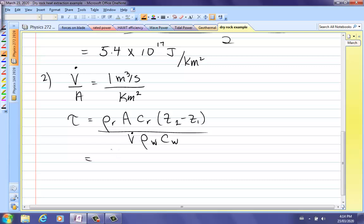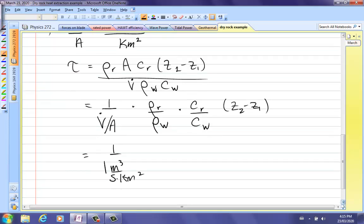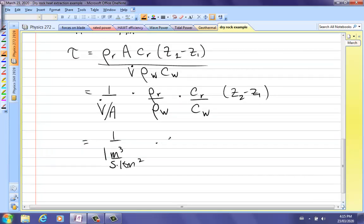Density of that rock. Well, what we can do is write it like this a lot easier. This is 1 over V dot over A. I'm just going to take the A to the bottom of the bottom, which is the same as the top. Ratio of density of rock to density of water. Ratio of specific heat capacity of rock to specific heat capacity of water. Those are now unitless ratios there. Times Z2 minus Z1. It's going to be in kilometers. So this is 1 over 1 meter cubed per second kilometer squared. Ratio of density of rock to density of water is 2,700 over 1,000. Specific heat capacity of rock over water, I'm going to use 4,200 here, not 4,186. So I get the same numbers in the book. So 7 minus 3.5 kilometers.